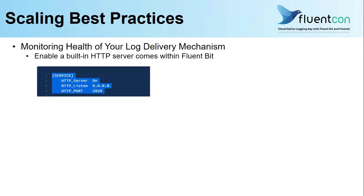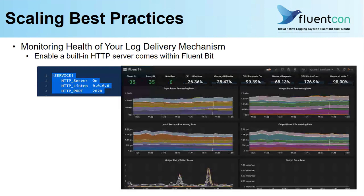The last best practice I want to recommend is monitoring the health of your log delivery mechanism. This is really important but often an ignored aspect. Fluentbit has a built-in HTTP server that comes with it. You can enable this in your Fluentbit configuration and use a dashboard to monitor and get more insight into your pipeline health. Now I am handing over to my colleague Wesley, who will talk about the worker concept and how it helps with the scaling aspect of Fluentbit.